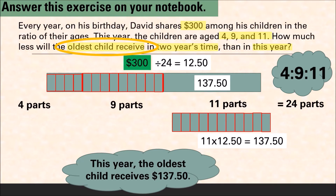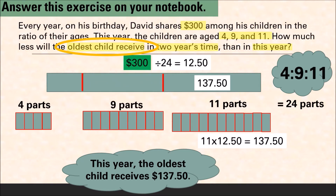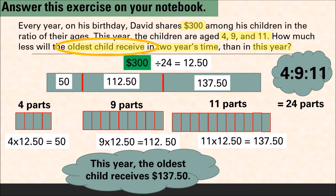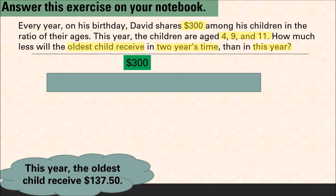So this year the oldest child receives one hundred and thirty-seven dollars and fifty cents. We don't actually need how much the other two children receive, but for presentation purposes: the youngest child receives four parts — 4 times twelve fifty — which is fifty dollars, and the middle child receives nine parts — 9 times twelve fifty — which is one hundred and twelve dollars and fifty cents.